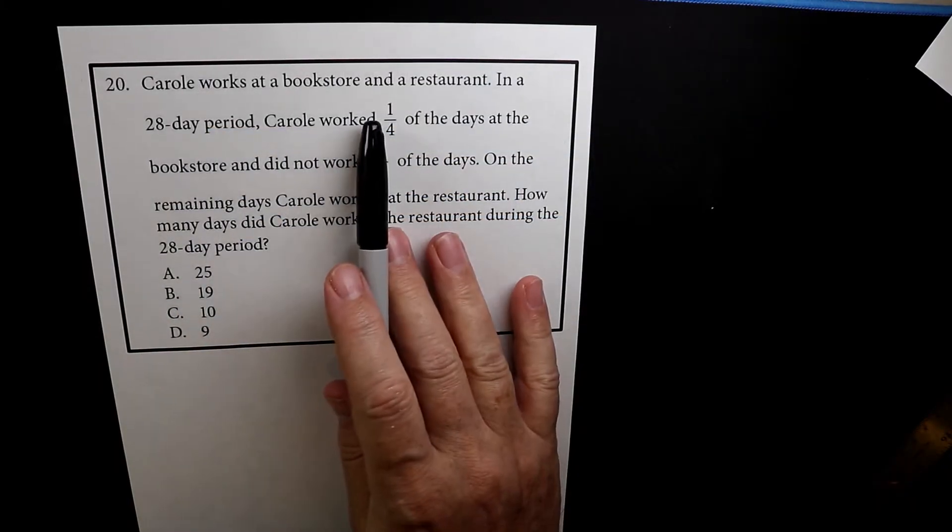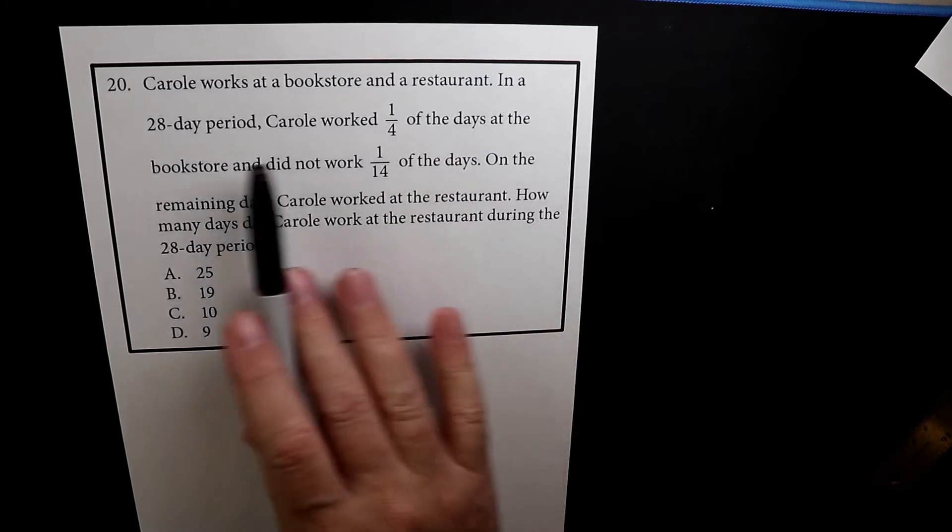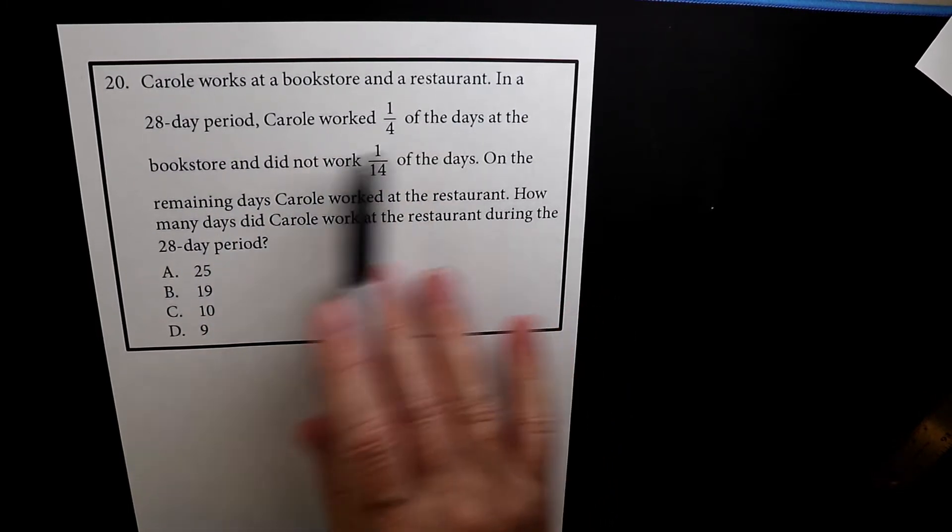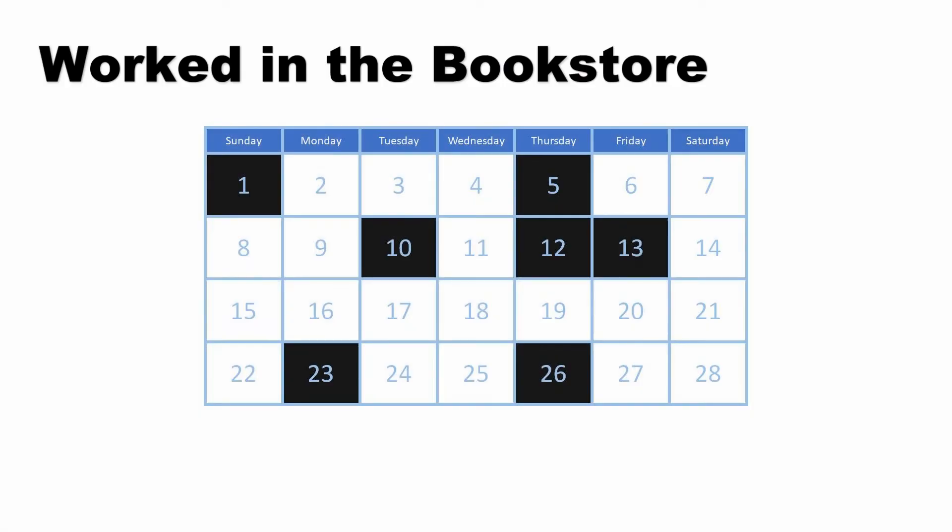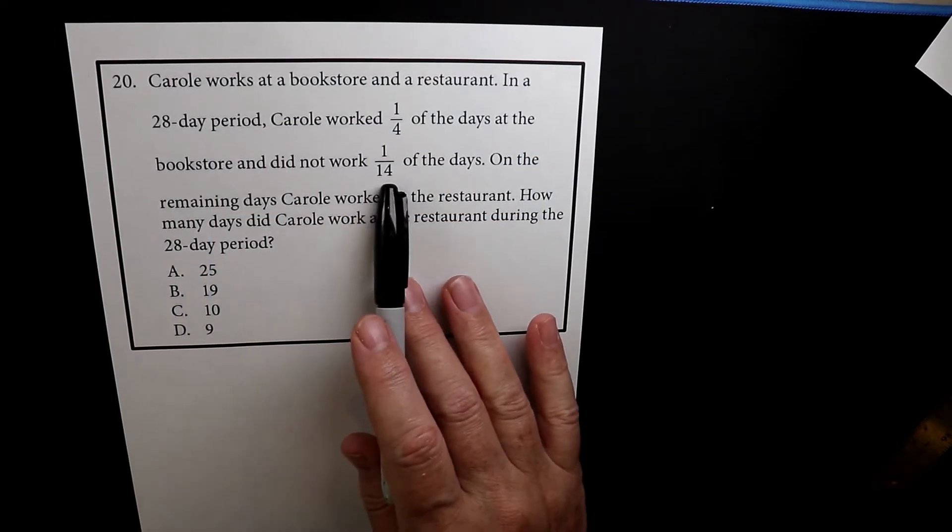Carol works in a bookstore and a restaurant, so she has two jobs. In a 28-day period, Carol worked one quarter of the days at the bookstore. That's one quarter of the four-week, 28-day period, and did not work on one-fourteenth of the days.